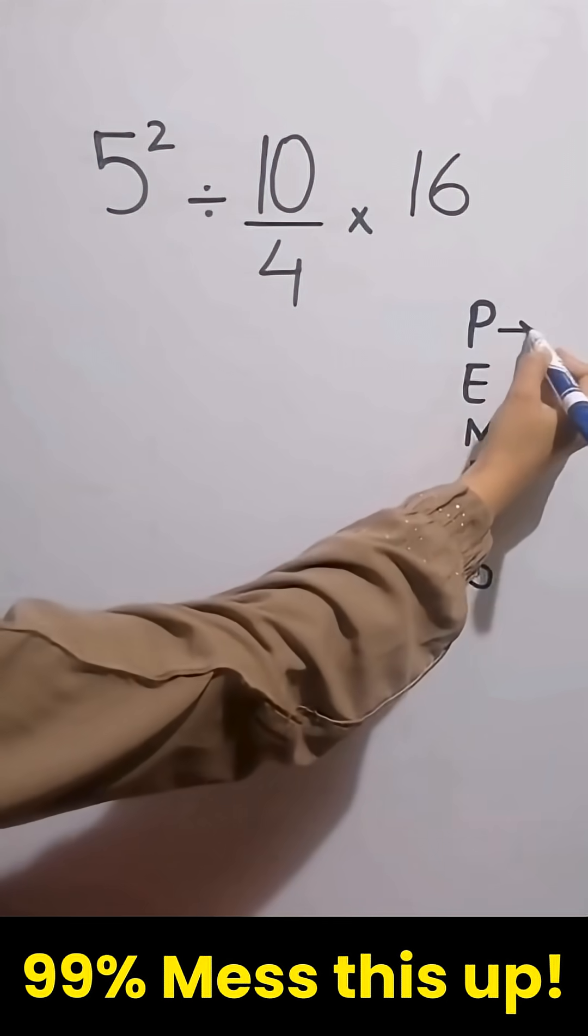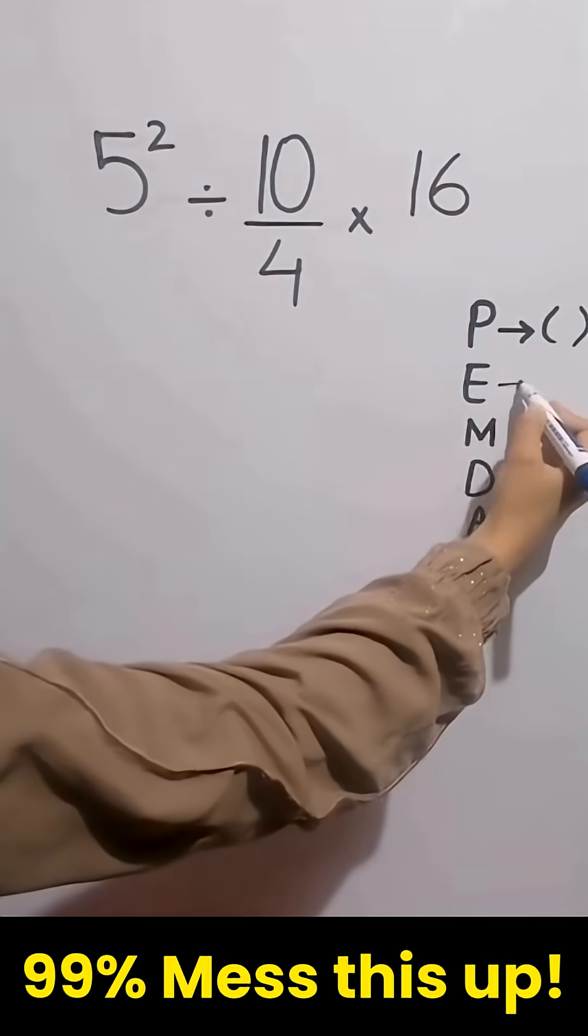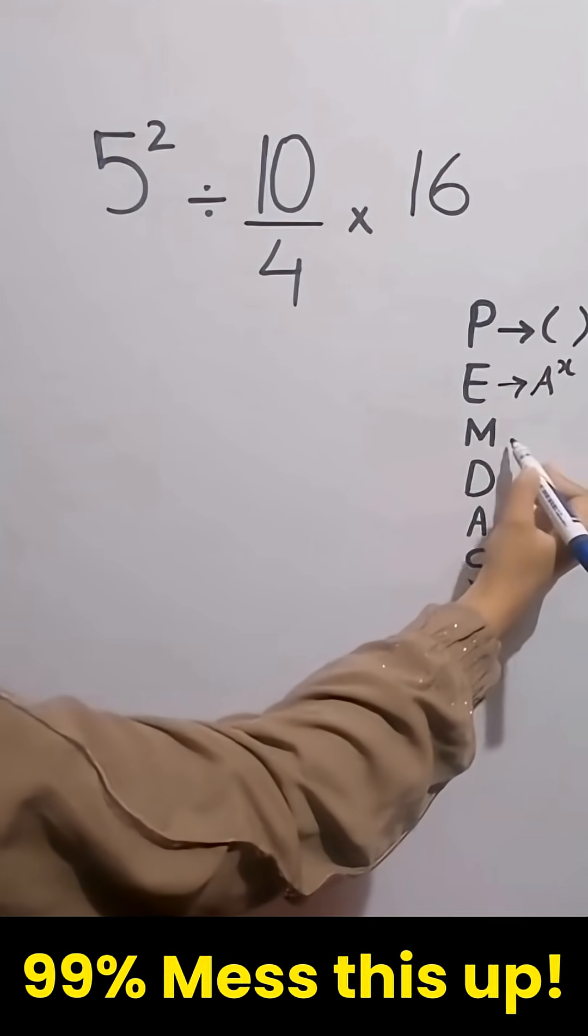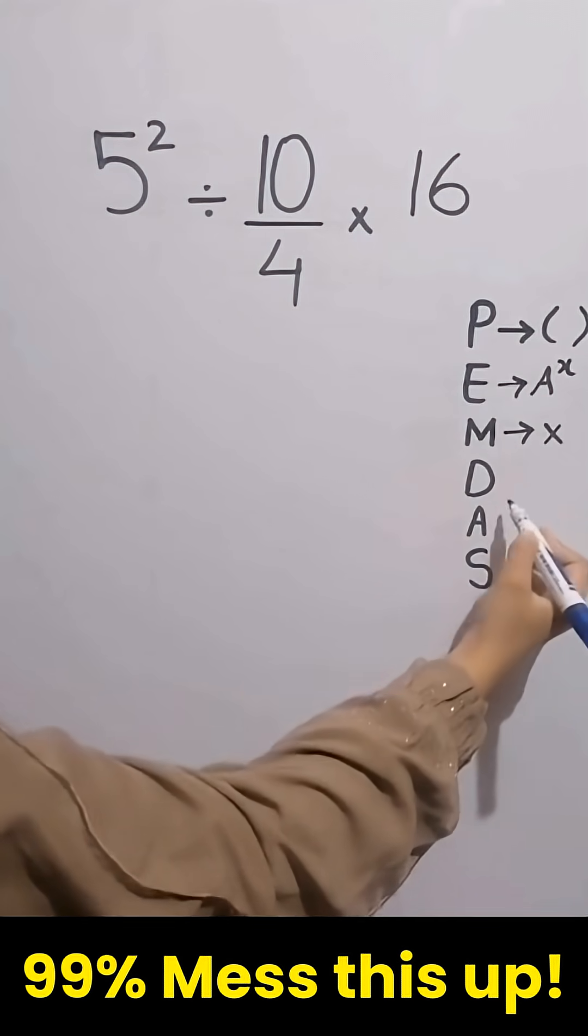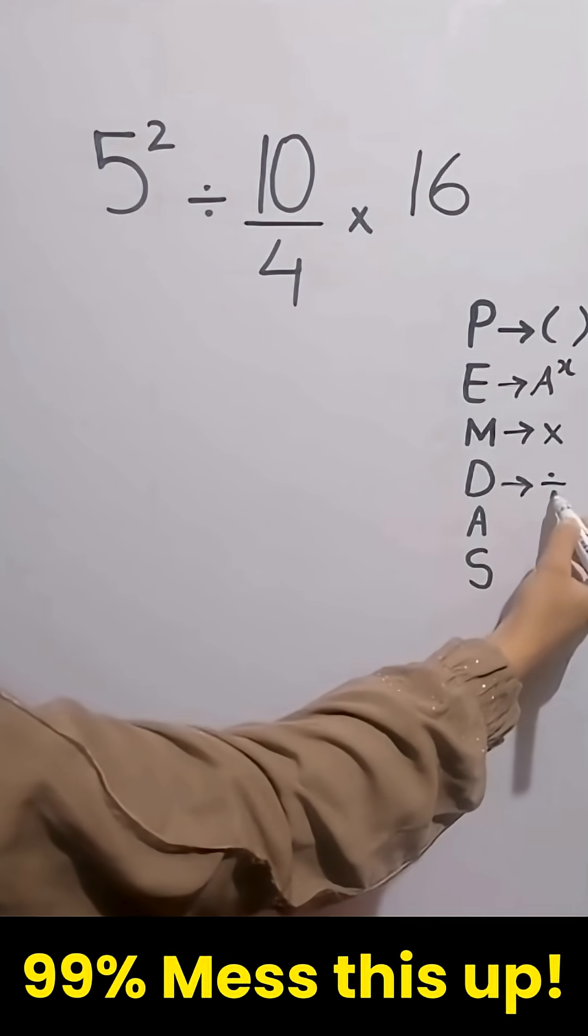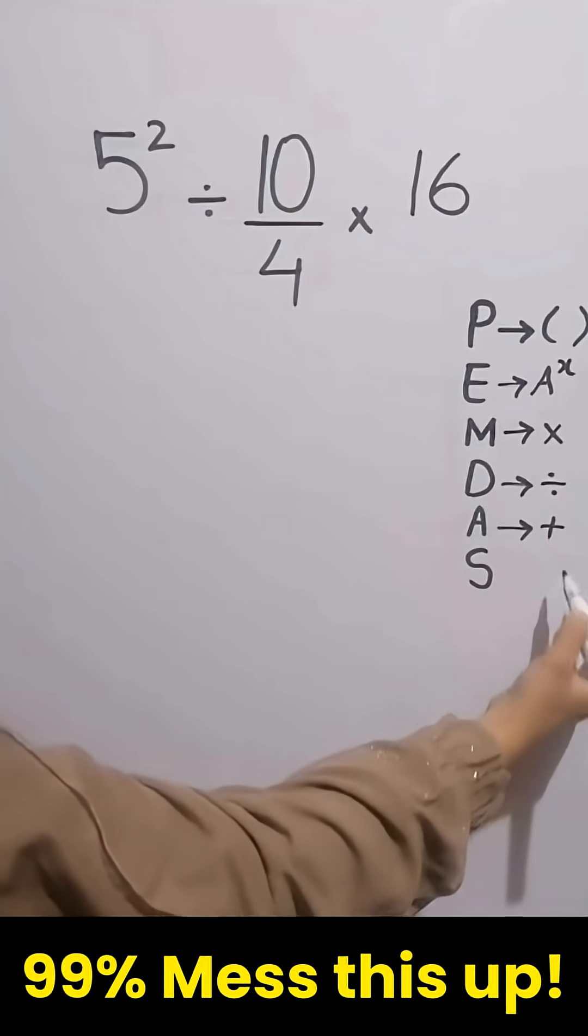In this rule, P stands for parentheses, E stands for exponent, M stands for multiplication, D stands for division, A stands for addition, and S stands for subtraction.